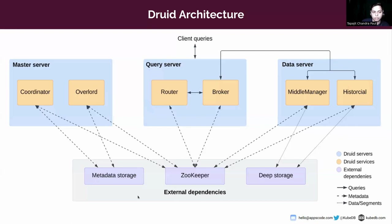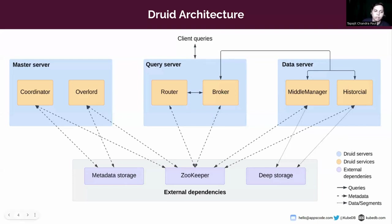Other than the built-in services, Druid depends on external dependencies. First is deep storage — it stores any data that has been ingested into the system. Deep storage is basically a shared file system accessible by all Druid processes. Druid uses deep storage for two reasons: to store all ingested data segments that get loaded into historicals for low-latency queries, and also for backup purposes and as a way to transfer data between services.